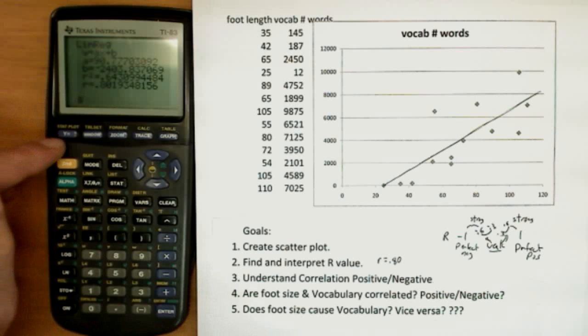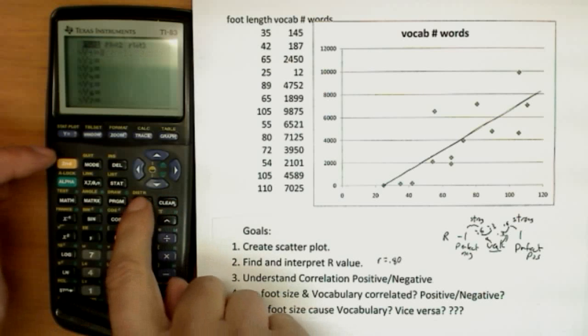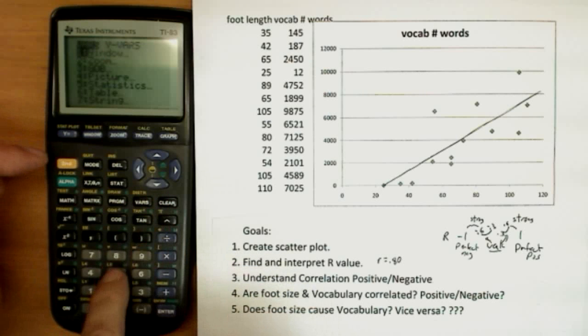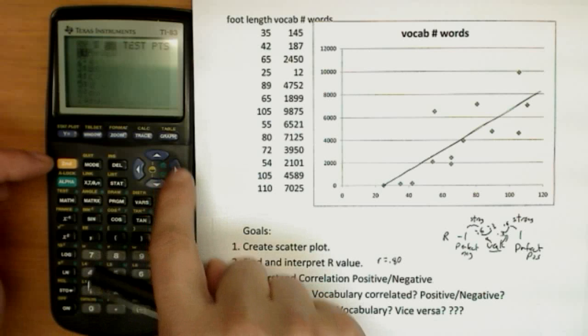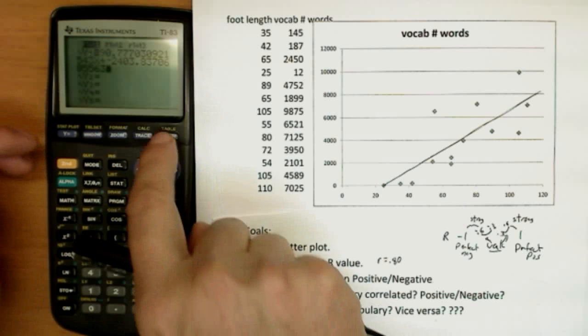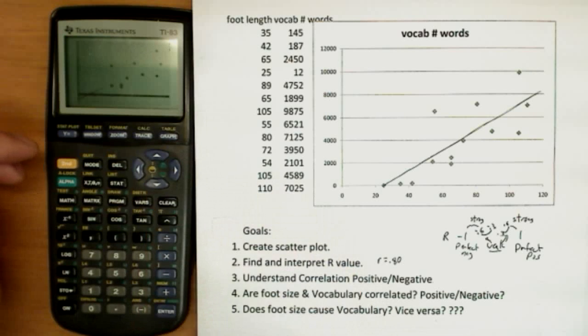We could actually plot the line in our calculator. Press variables and statistics and equation. And I can quickly make it jump in. And graphing, it'll add the line into the data. So not far off from what I drew just freehand guessing here. And that's what the line looks like.